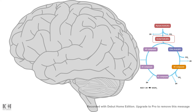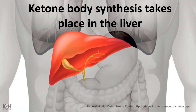Acetyl-CoA is one of the most important metabolic intermediates which can be utilized inside the brain. Keep this in mind, because in a fasted state you cannot have glucose in the brain — glycolysis won't occur and pyruvic acid won't be produced. So the question is: where does acetyl-CoA come from in the fasted state?